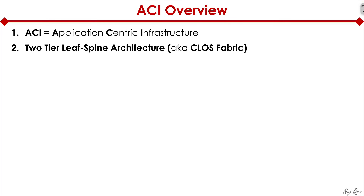What ACI does is give us a two-tier leaf-spine architecture, also called Clos Fabric. It's named after its inventor and designer, Clos. This leaf-spine technology was designed back in the 1950s and was primarily designed for telephony infrastructure within the service provider realm.